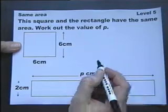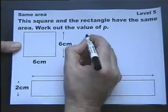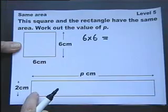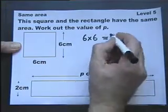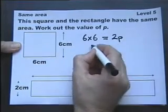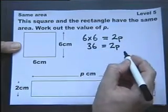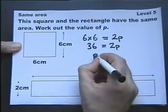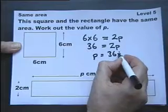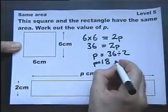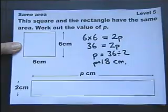You need to appreciate that the area of the square is 6 times 6, and the area of the rectangle is 2 times P, which we just write as 2P. 6 times 6 is 36, and if 2P is 36, then P itself must be 36 divided by 2, which is 18. Don't forget to say centimeters, and there you go.